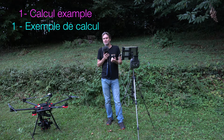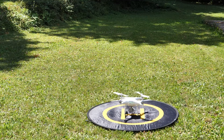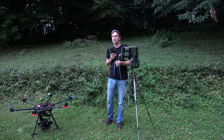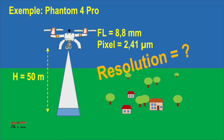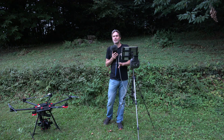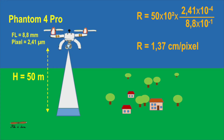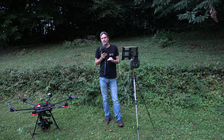Let's take an example with the Phantom 4 Pro. We know that its focal distance is 8.8 mm, the pixel size is 2.41 µm. Supposing we fly at 50 m high, what is the resolution? Applying the formula, we find 1.37 cm per pixel.